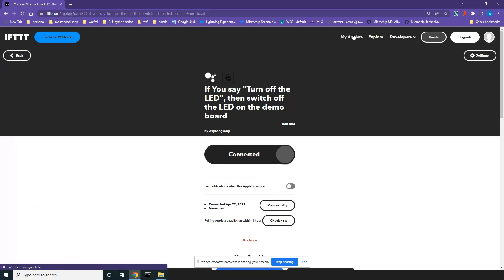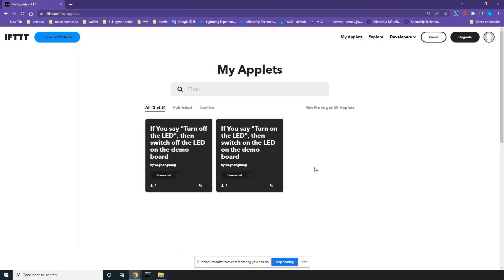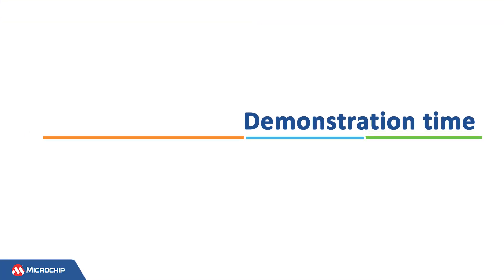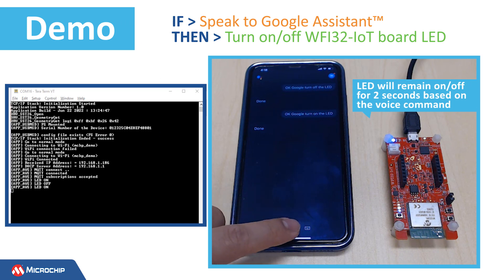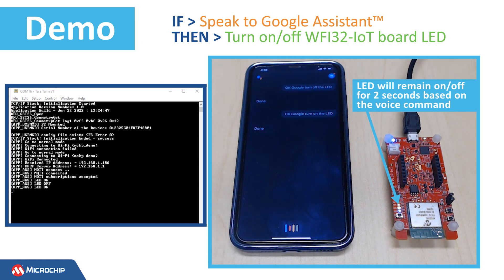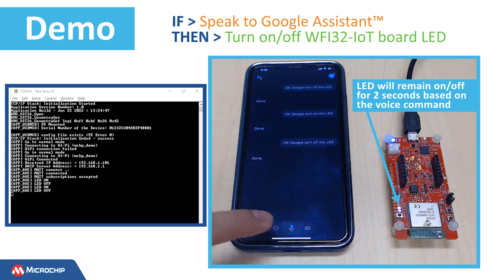Do the same steps to create the second applet for switching the LED to OFF. You have now created two IFTTT applets for switching the LED ON and OFF. With the applets active, you can say to Google Assistant: 'Turn off the LED' or 'Turn on the LED' to control the board.